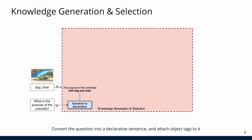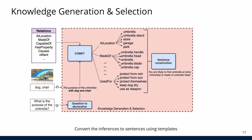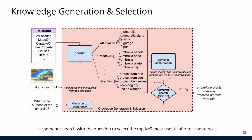The knowledge generation and selection pipeline works as follows. We convert the question into a declarative sentence and attach object tags to it. Given a fixed set of relations, COMET is used to generate relevant common sense inferences. These inferences are converted to sentences and cosine similarity against the question is used to rank them. The top five most useful inferences are used in our transformer model.